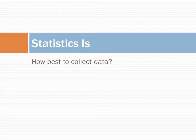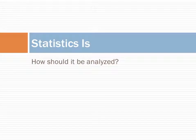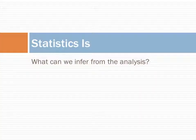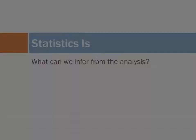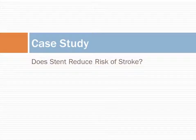Statistics is three things: how best to collect data, how should it be analyzed, and what can we infer from the analysis. This section introduces a classic challenge in statistics — evaluating the efficacy of an intervention. We introduce terms and give an overview of the role of statistics.